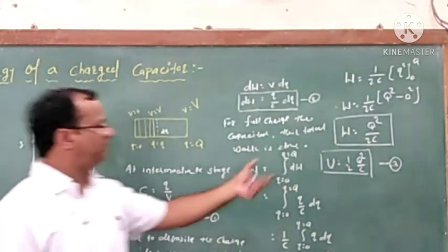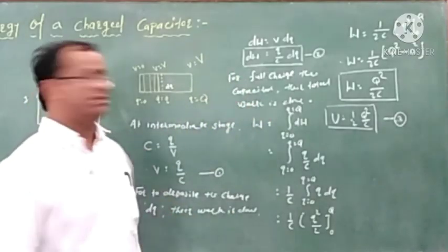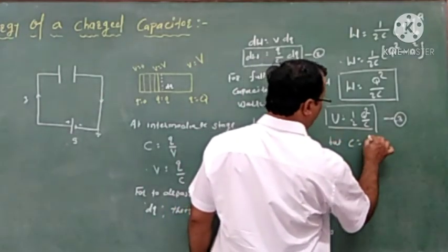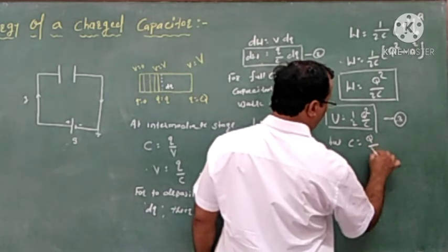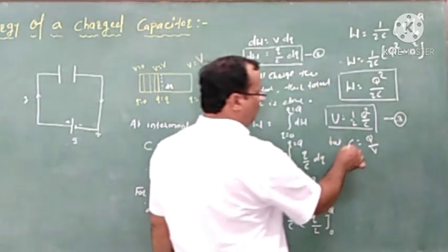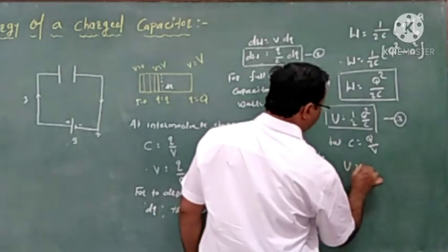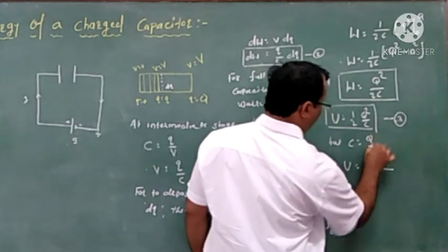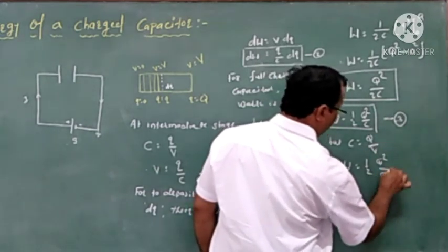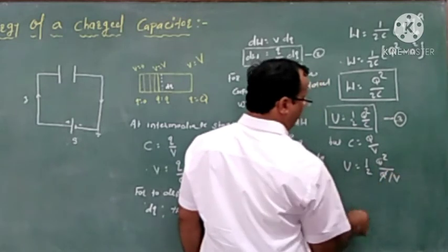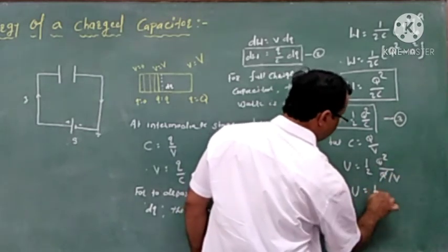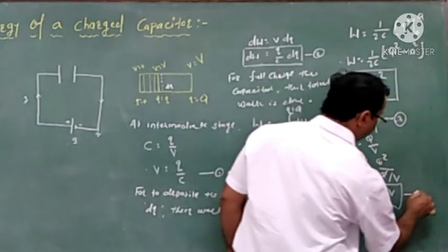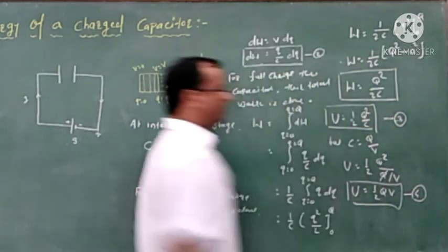Now, for further forms of the energy of a charged capacitor, we know that C equals Q upon V. Substituting this value, energy U equals half times Q squared, and the value of C is Q upon V. One Q cancels, giving energy U equals half of Q times V. This is another form of the energy of the charged capacitor.